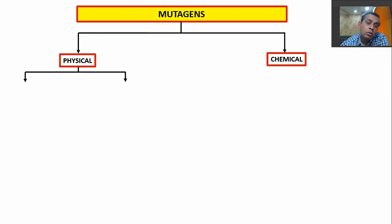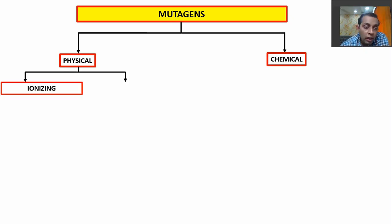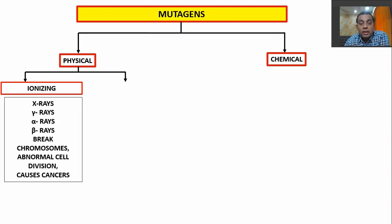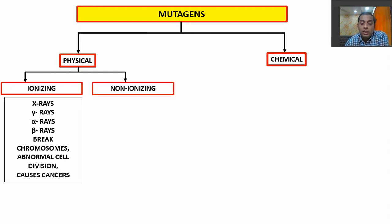Physical mutagens involve physics, and chemical mutagens involve chemistry. In physics, you know that there are different radiations. Some radiations are ionizing radiations and some are non-ionizing radiations.